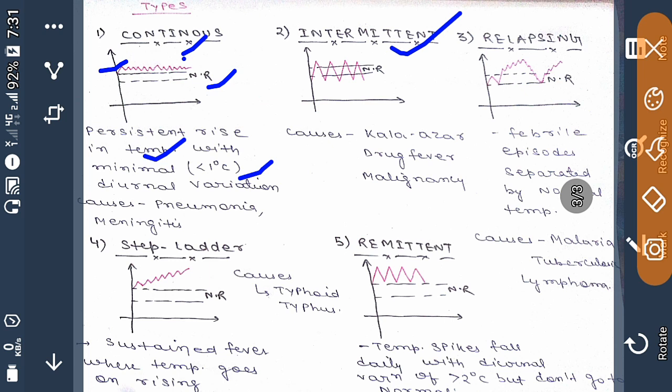In intermittent type of fever, the temperature rises, comes to normal, then again rises, then comes to normal. There is a rise in temperature above normal and then returning to normal or sometimes below normal. This type of fever is known as intermittent fever, and its causes are malaria, drug fever, and malignancy.